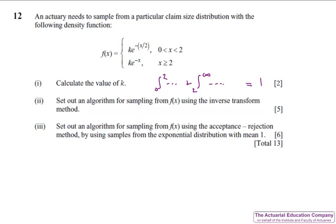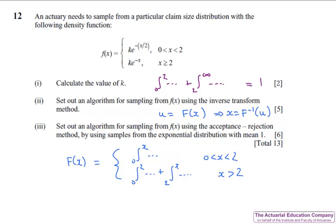In part two, we need the inverse transform method, and so we're going to need to calculate the CDF so we can set it equal to our value from a uniform 0, 1, and invert it to get the value of X. But our CDF will have to be in two parts. The first part will be for values of X between 0 and 2, and so we'll just integrate the first part of the PDF. The second part will be values of X greater than 2, but don't forget we'll need to add on the integral of the first part to get the full probability.